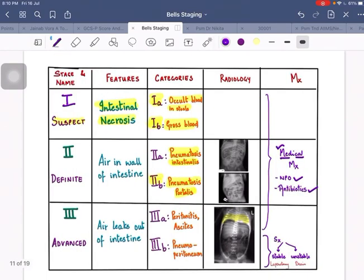So let's discuss Bell Staging. Stage 1 is a suspected case of NEC where there is intestinal necrosis. It's categorized into Stage 1a and 1b. 1a is occult blood in stool, and 1b is gross blood in stool.